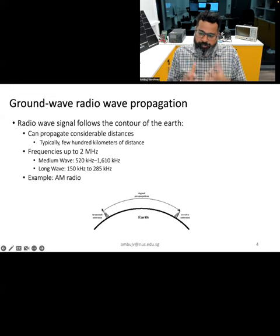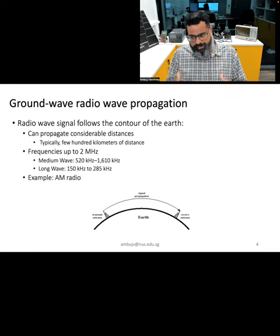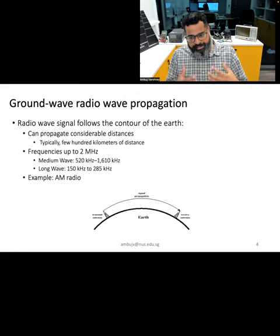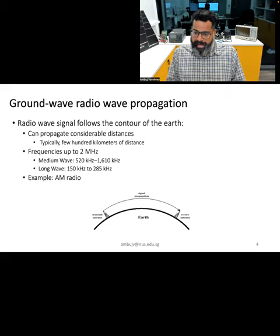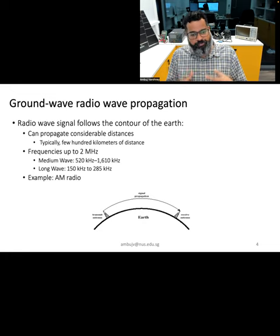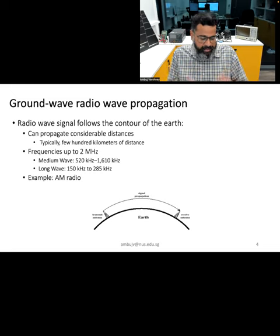Let's discuss ground wave propagation. This method refers to radio waves that travel along the Earth's contour or surface. The typical frequency range for these signals is up to 2 MHz, meaning the wavelength is on the order of tens of meters. These radio waves can easily propagate for a few hundred kilometers. A prime example is AM radio, which was widely used to allow transmission of audio broadcasts over long distances, spanning significant parts of an entire country.